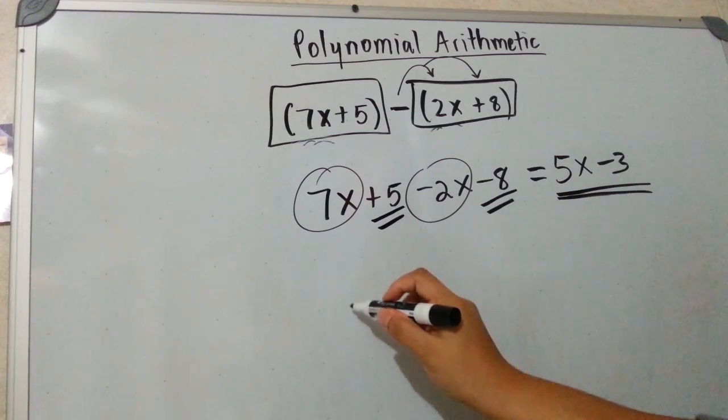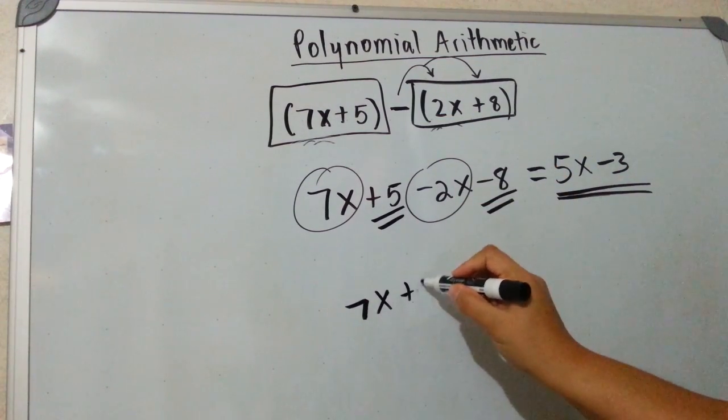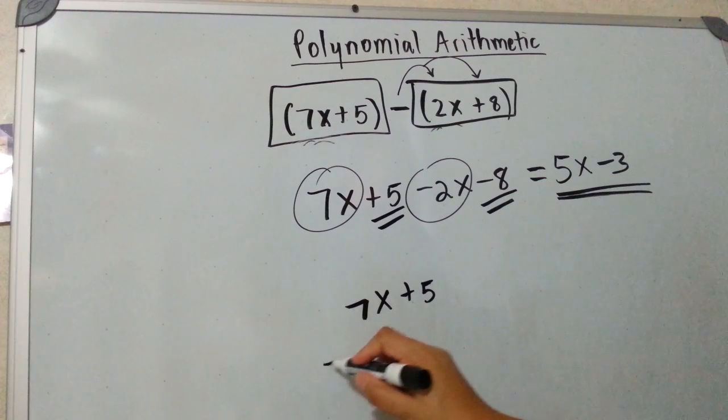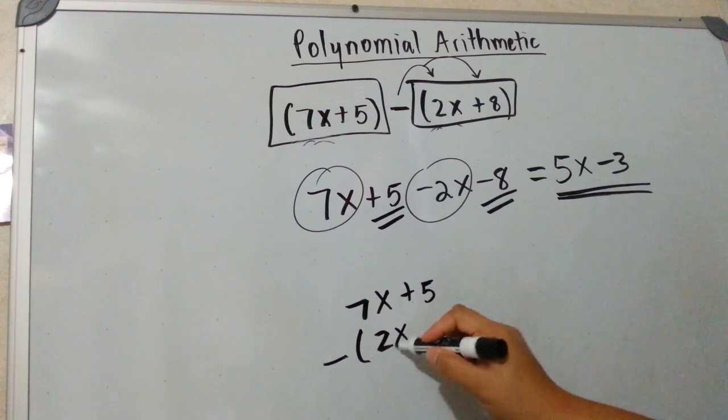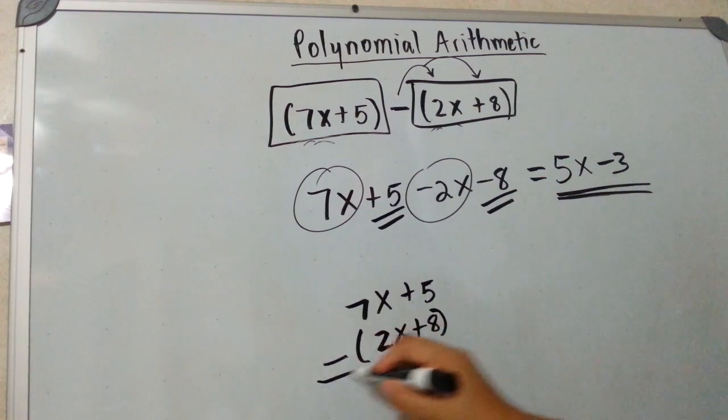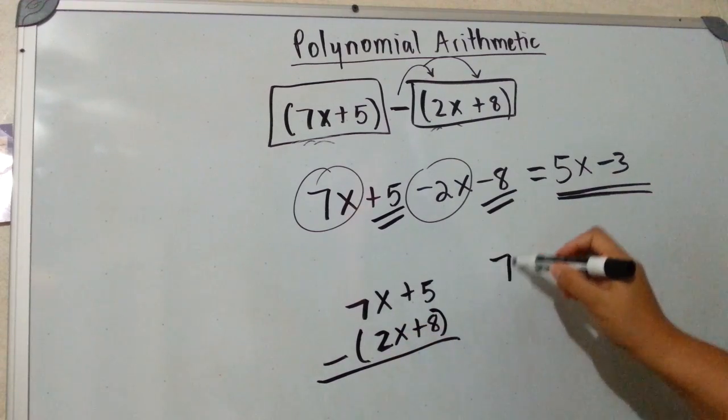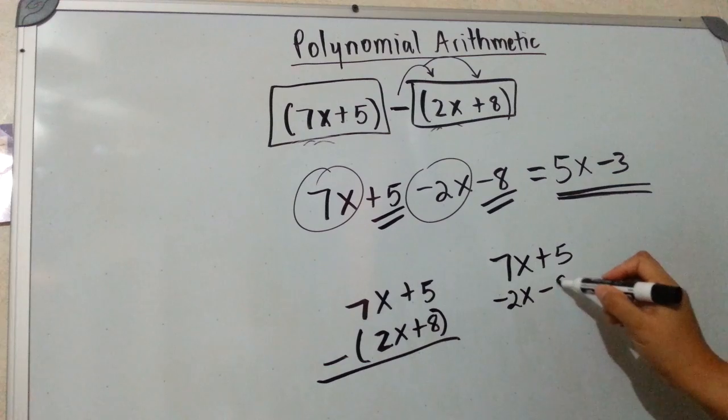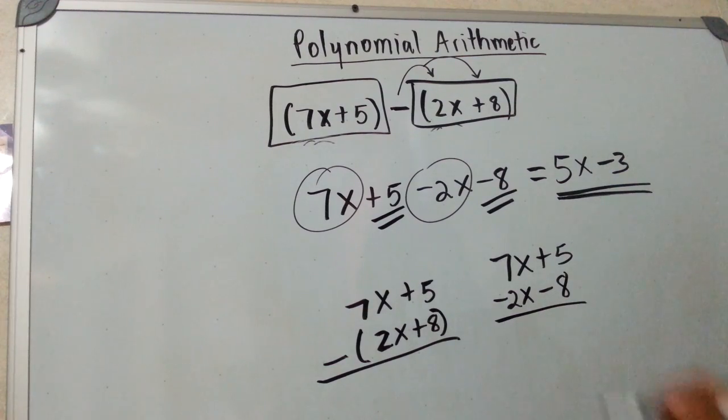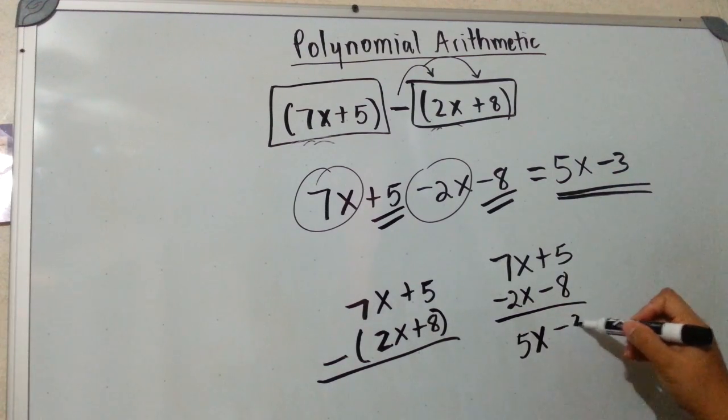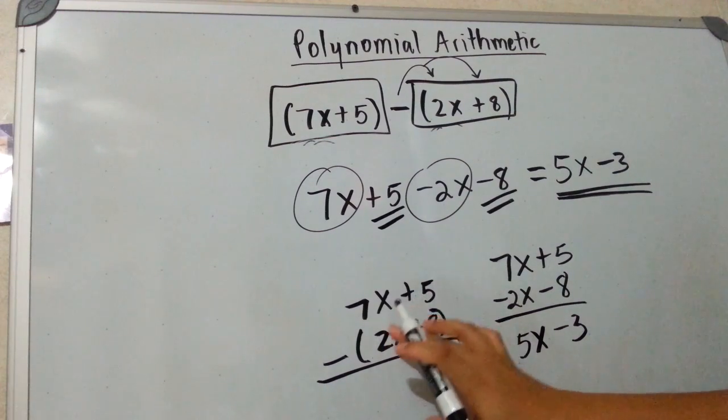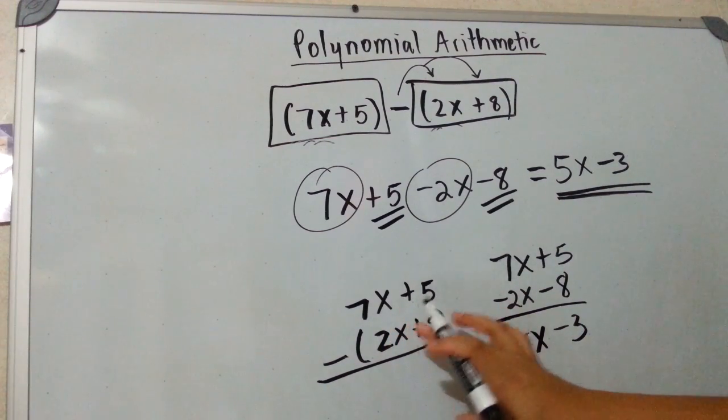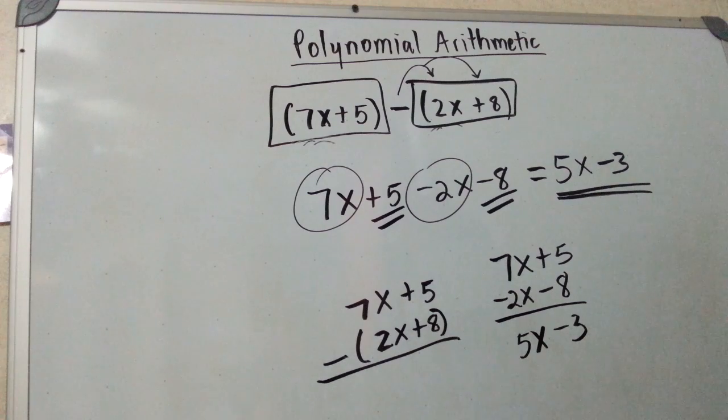And once again, if you're going to do this vertically, you have to remember that you have to change the sign. So it's 7x plus 5 minus 2x minus 8. And then you also get the same thing. But if you don't change the signs on both terms or on all the terms of the polynomial you're subtracting, you're going to get the wrong answer.